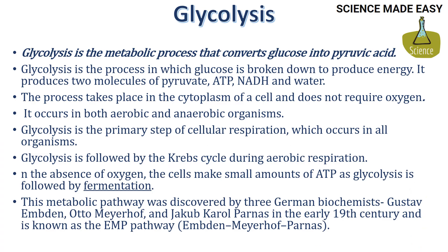Glycolysis cycle is a metabolic process that converts glucose into pyruvate acid. It is a process in which glucose is broken down to produce energy, and it produces two molecules of pyruvate, ATP, NADH, and water.